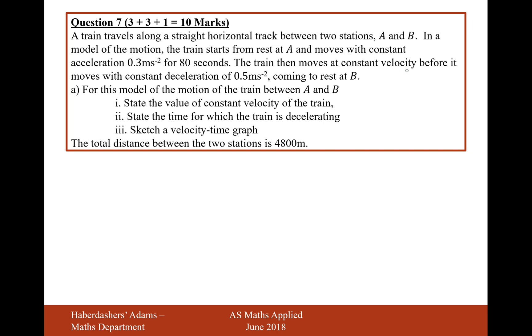The train then moves at constant velocity before it moves with constant deceleration of 0.5 metres per second, coming to rest at B. For this model of the motion of the train between A and B, state the value of the constant velocity of the train, state the time at which the train is decelerating, and sketch a velocity time graph.